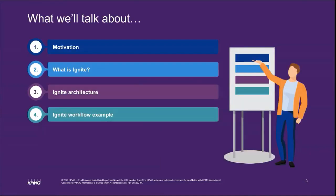We're going to give a little background around the motivation for building what we call KPMG Ignite, which is our data science platform and ecosystem to bring use cases from POCs into production. We'll drill into what Ignite is, how it works on top of OpenShift, how it produces business value, and then go into some architectural components. The last part is the demonstration — we'll walk through how the business, data scientists, and engineers can interact with the platform and productionalize pipelines on OpenShift within containers.